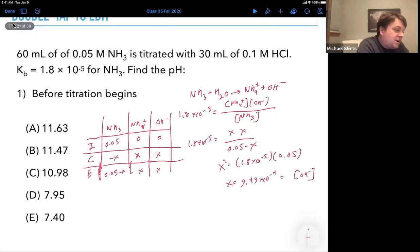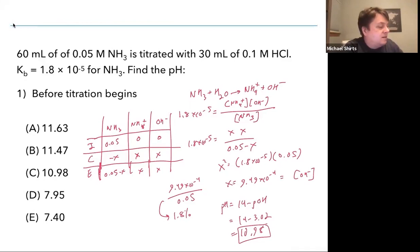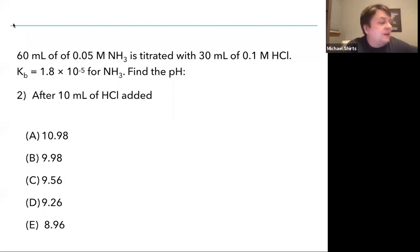That's our concentration of OH⁻. Let's check: 9.49 × 10⁻⁴ divided by 0.05 ends up being 1.8%, so this is a good approximation. The pH = 14 - pOH, which equals 14 - 3.02 = 10.98. So it's a weak base, we've got the concentration, and now it's going to start being titrated with the acid.